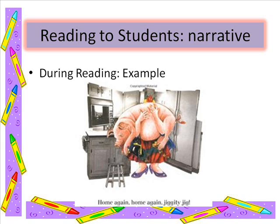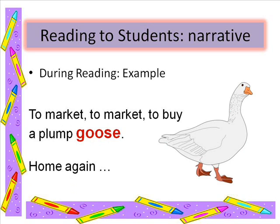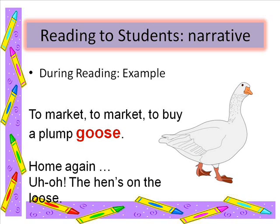'To market to market to buy a red hen. Home again.' Oh no! That pig left the pen. I think I was right — this is a rhyming book. First we had pig and jig, now we have pen and hen. So far the lady has bought a pig and a hen. What do you think she will buy next? Here you would pause for student guesses — any guess is correct. Those are all good guesses, class. Let's keep reading and see what she does next. 'To market to market to buy a plump goose. Home again.' What do you think will be happening at home? Oh no! The hen's on the loose! It seems that when the lady gets home from the market with something new, the last animal is doing something that rhymes with the new animal.